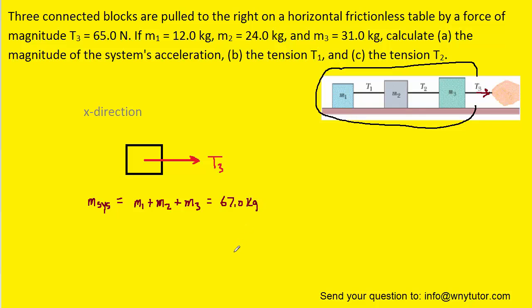We can now apply Newton's second law in the x direction, which tells us that the net force is equal to ma. The only force acting in the x direction on the system is T3. We were given that value, and we also know the mass of the system, so we can solve for a.